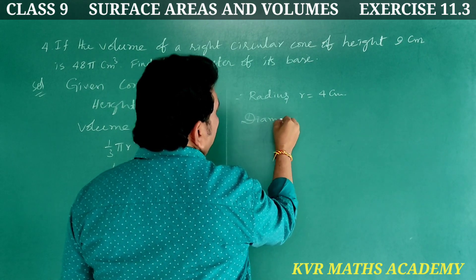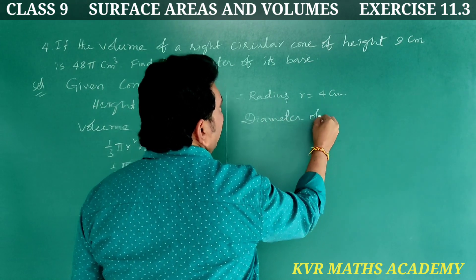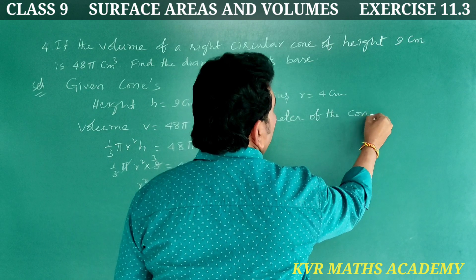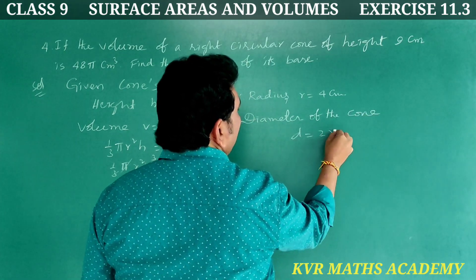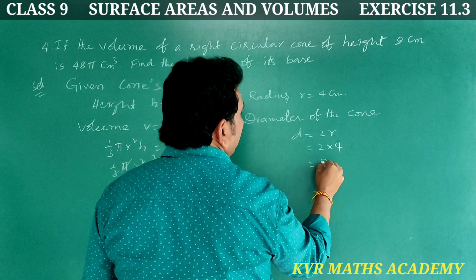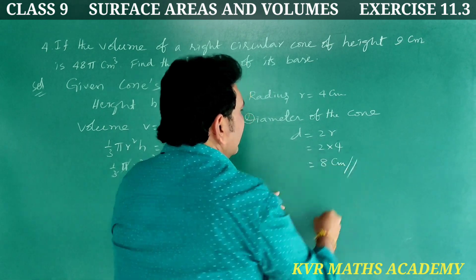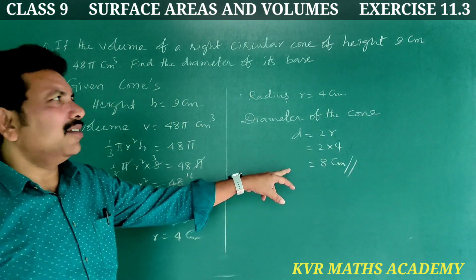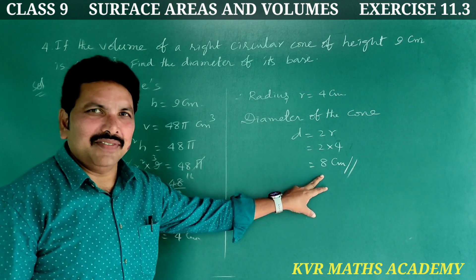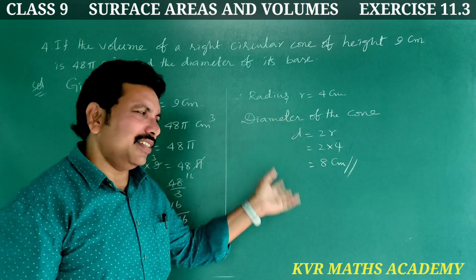And diameter, diameter of the cone D is equal to 2r. That is equal to 2 into 4, 8 centimeters. So diameter of the required cone is equal to 8 centimeters. Have you understood clearly?